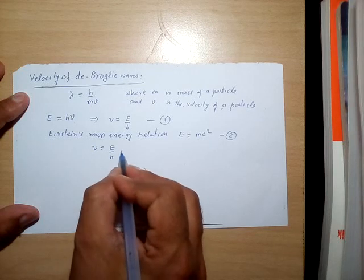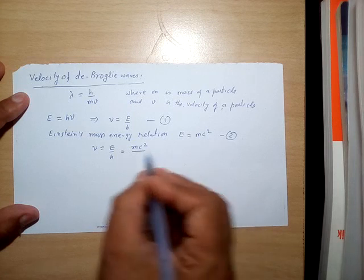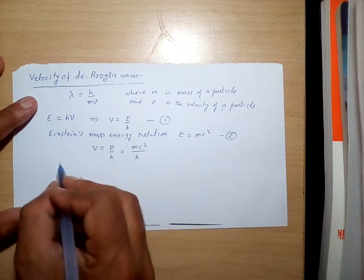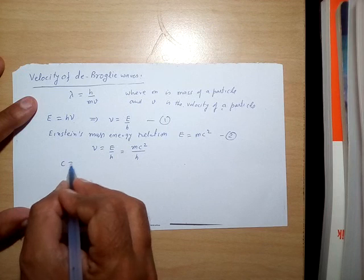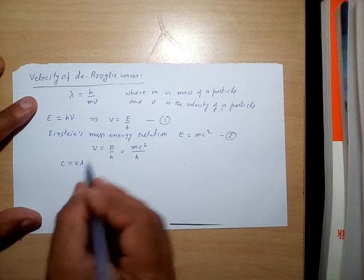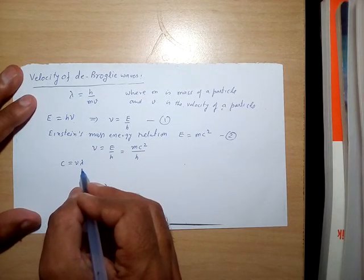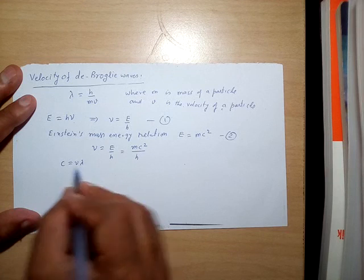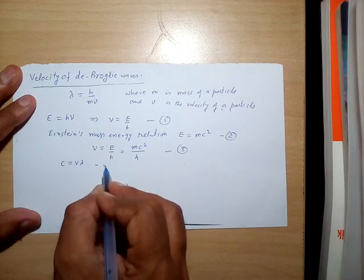Now using equation number two in equation number one, ν comes out to equal E/h = mc²/h. We also know that the velocity of light is given by c = νλ according to wave mechanics, where ν is the frequency. This gives us equation number three and equation number four.